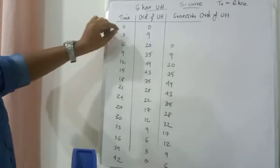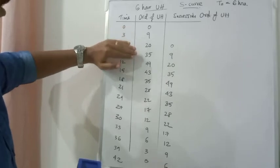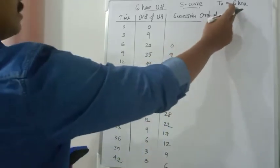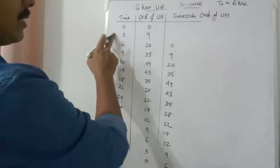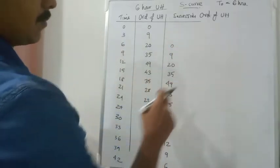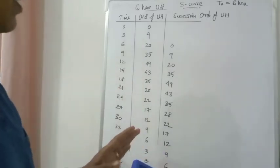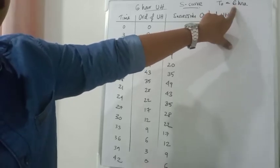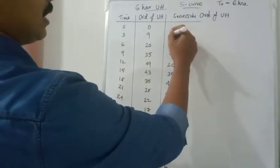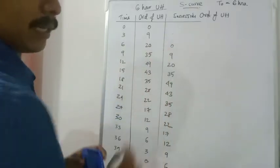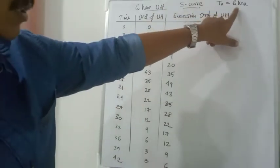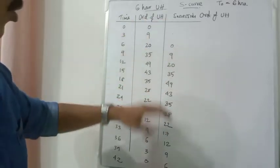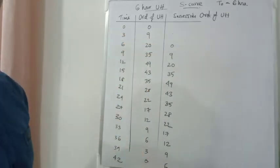Why 2 rows? Because T0 is 6 hours and the time interval is 3 hours, so 6 divided by 3 gives 2 rows of lagging. For example, if the time values were 0, 6, 12, 18 with an interval of 6 hours, we would lag only 1 row. But here, with a 3-hour interval and a 6-hour T0, we lag 2 rows. If T0 were 3 hours, we would lag only 1 row.